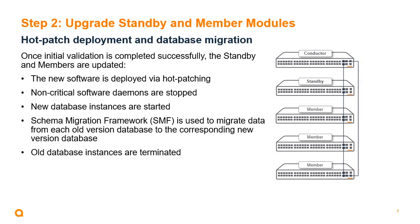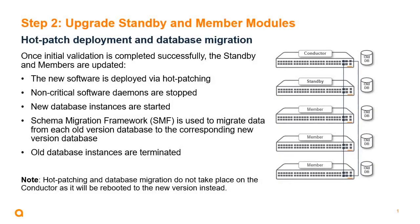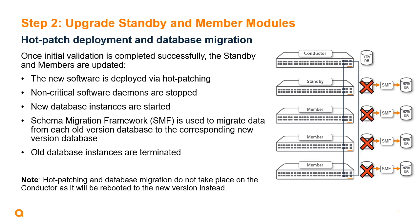Once the initial validation steps have been successfully completed, the standby and member switches are updated using hot patching and non-critical software daemons are stopped. New database instances are started using the data format required by the new software version. The schema migration framework is used to migrate data from each old version database to the corresponding new version database on each member. Once the data has been migrated successfully, the old database instances are terminated. Hot patching and database migration do not take place on the conductor, as it will instead be rebooted to the new software version.